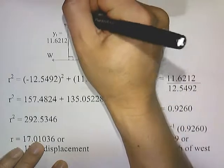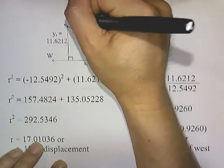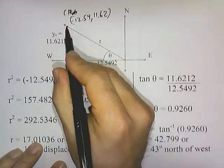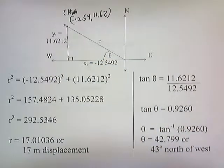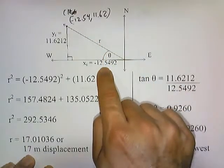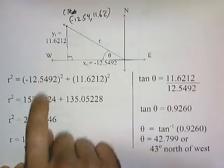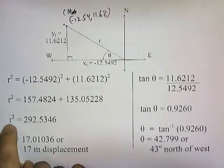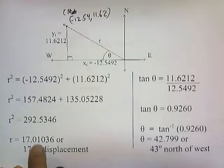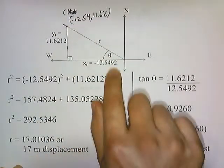y total is 11.62 and x total is negative 12.5492. To solve for r, we use the Pythagorean theorem: r squared equals x squared plus y squared. r squared equals negative 12.5492 squared plus 11.6212 squared. Taking the square root, r equals 17.01036, or rounded to two significant digits, 17 meters of displacement.